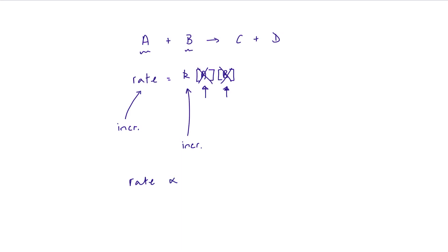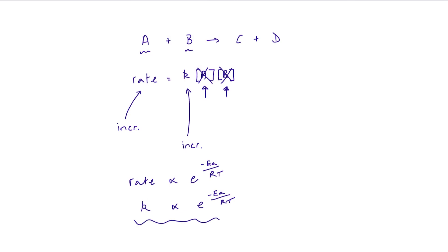If the rate is proportional to the number of particles that exceed the activation energy, then the rate constant must also be proportional to the number of particles with energy greater than the activation energy. So K is proportional to e to the power of minus Ea over RT. And this is the basis for the Arrhenius equation.